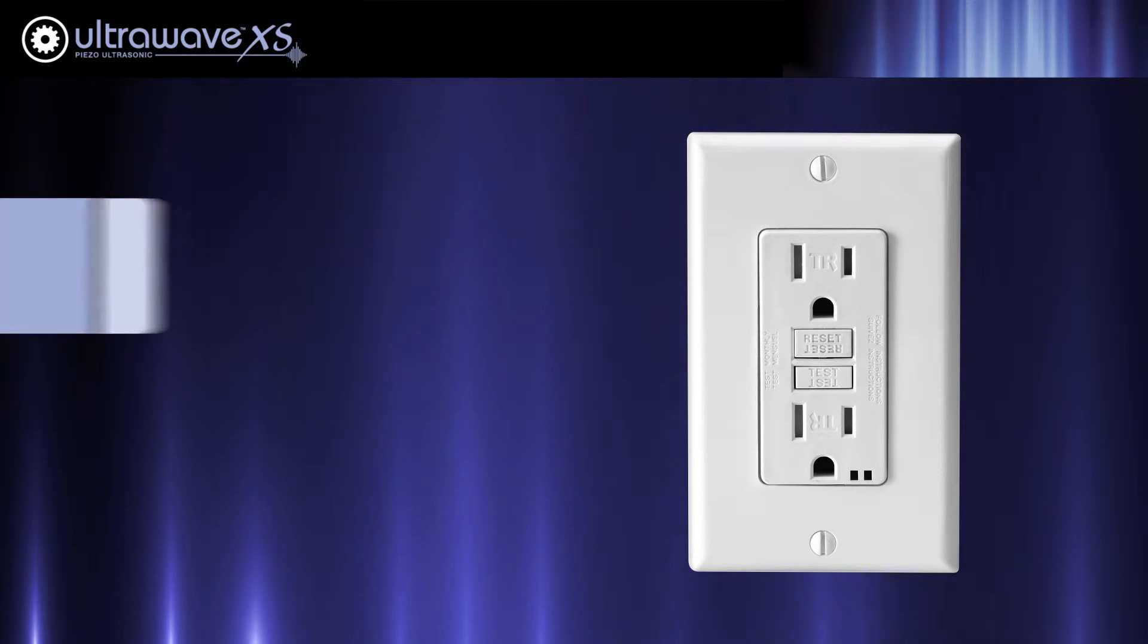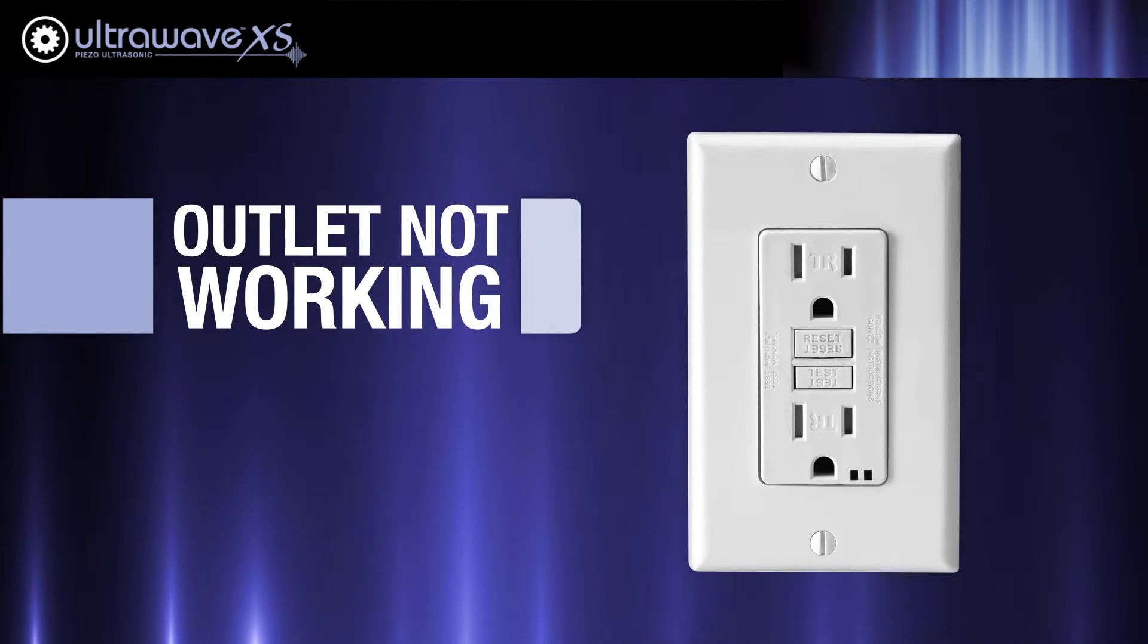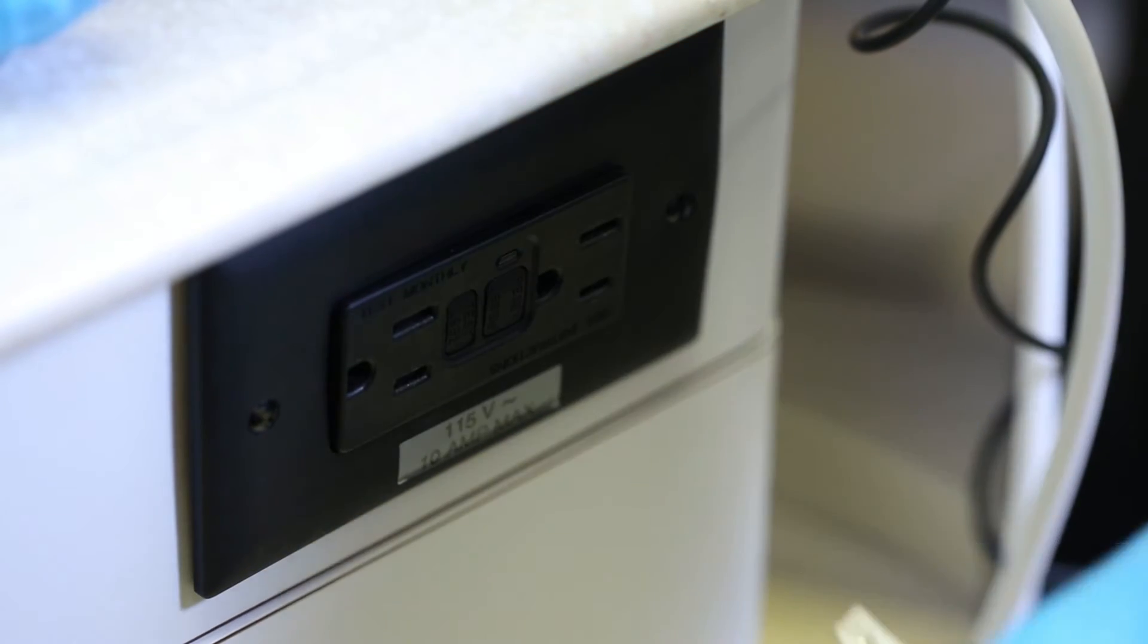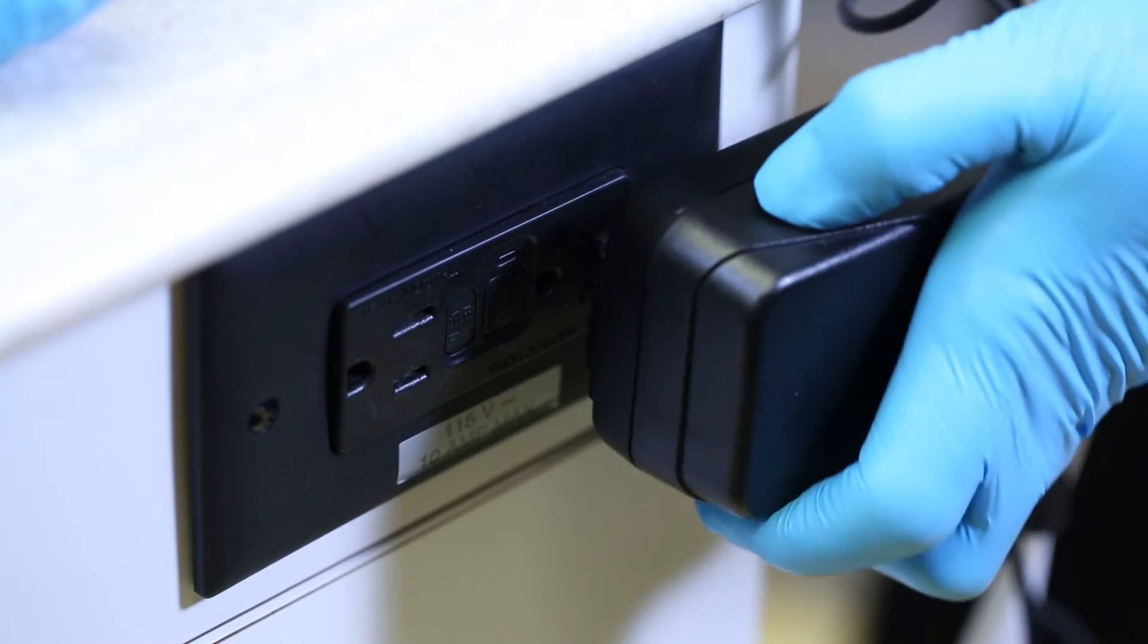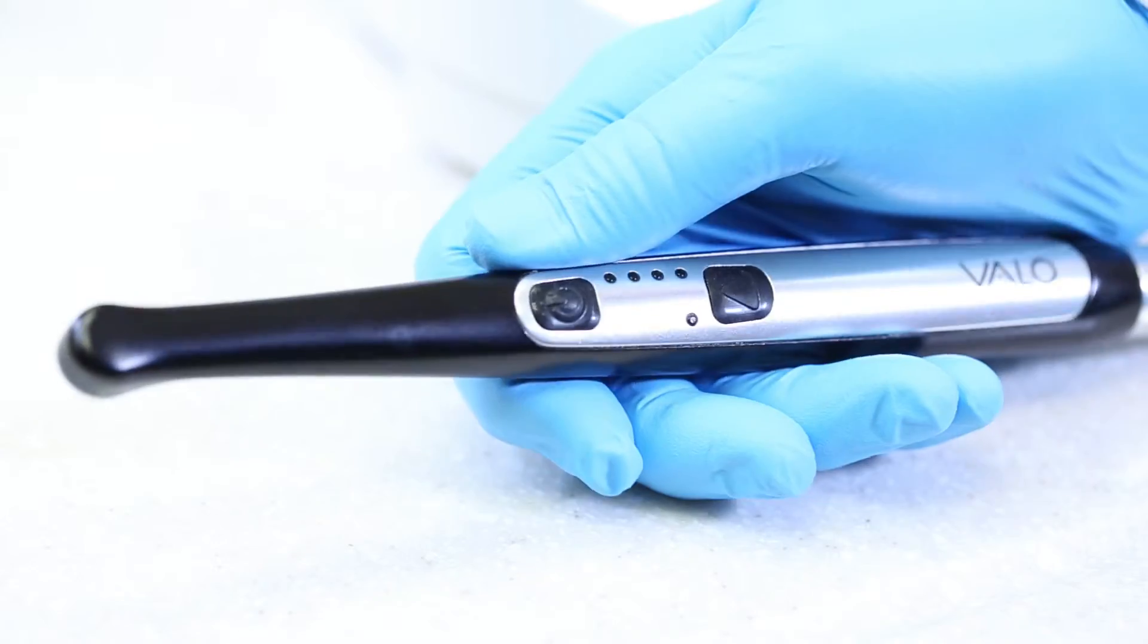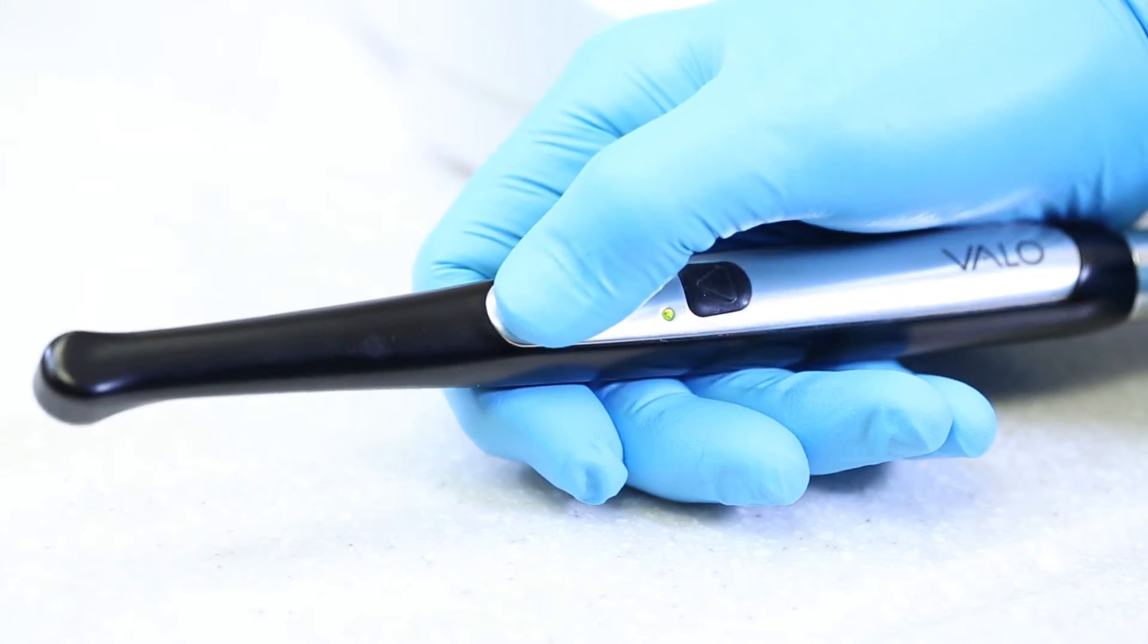If your ultrawave XS is not working, make sure there is not a problem with the outlet itself. You can do this by simply plugging in a different electrical device into the same outlet to see if it works. You can also move the ultrawave XS to another room and test it in an outlet there.